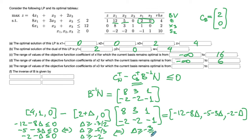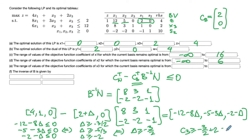So delta ≥ -3/2 is the lower bound on the increase in c3. This corresponds to c3 ≥ -3/2 + 2 = 1/2. Therefore the range for c3 is from 1/2 to positive infinity.